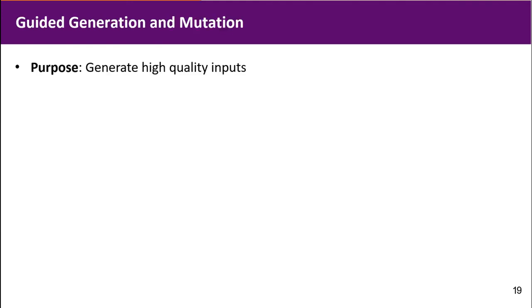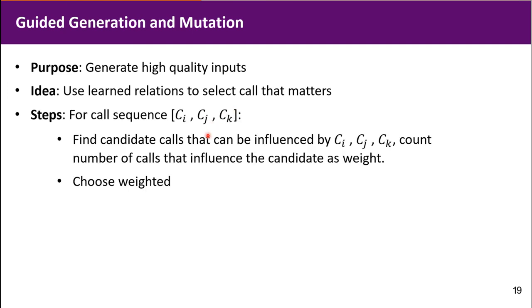Then we want to generate high-quality inputs with learned relations, so we can select calls that really matter. The basic step is that for a given sequence, we find all candidate calls that can be influenced by the calls inside the given sequence. Also, we count the number of calls that influence the candidates. We use it as weight.